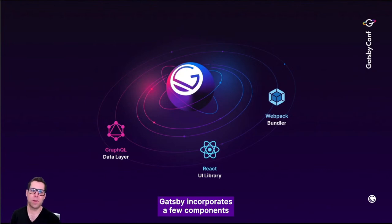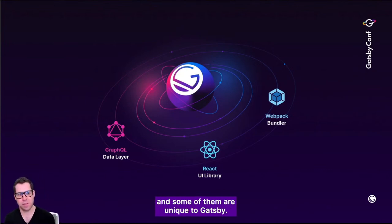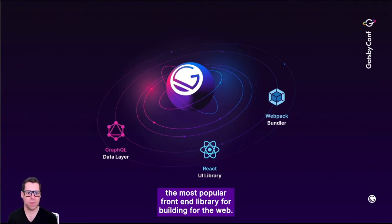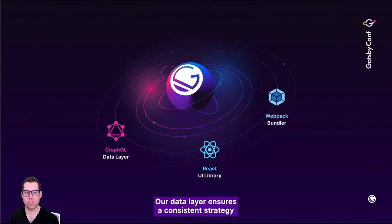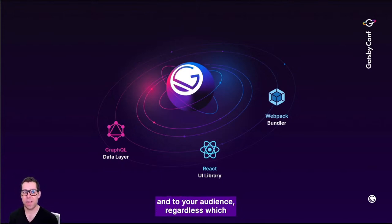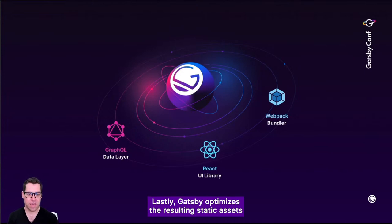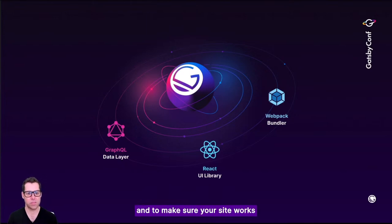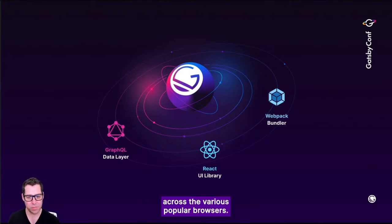Gatsby incorporates a few components, and some of them are unique to Gatsby. First of all, Gatsby is based on React, the most popular front-end library for building for the web. Our data layer ensures a consistent strategy for bringing your content into your site and to your audience, regardless of which or how many data sources are involved. Lastly, Gatsby optimizes the resulting static assets via webpack for performance and to make sure your site works across the various popular browsers.